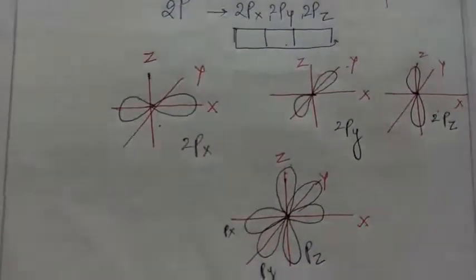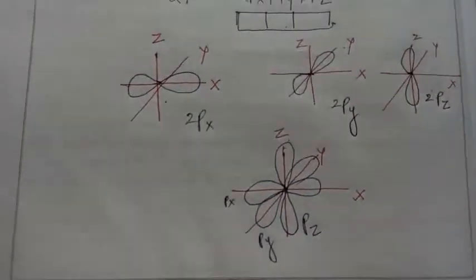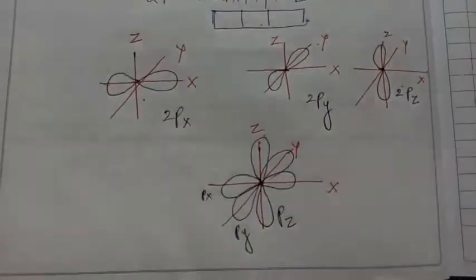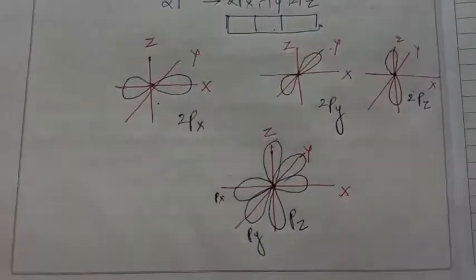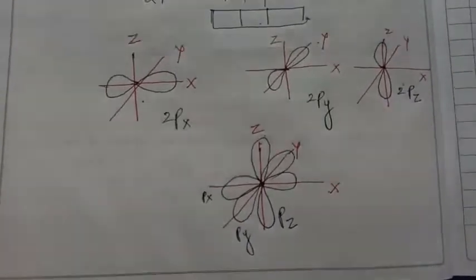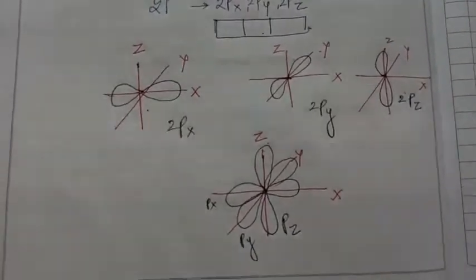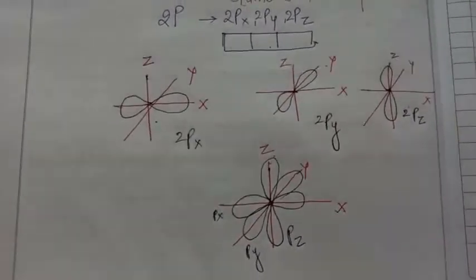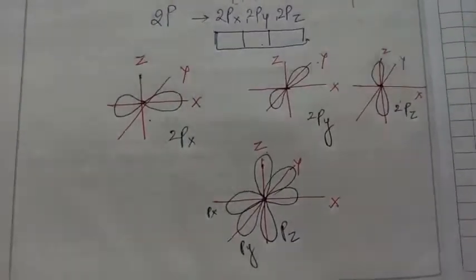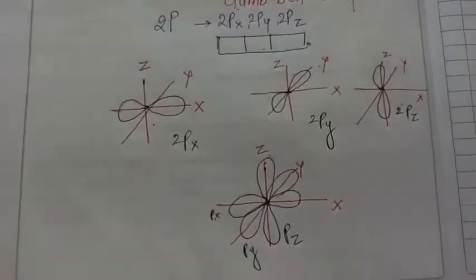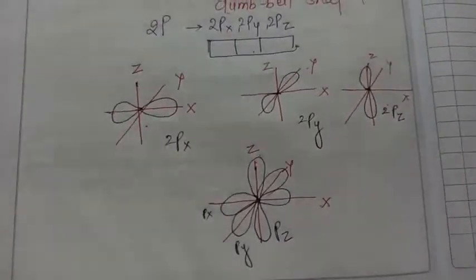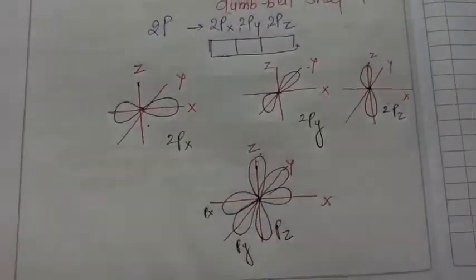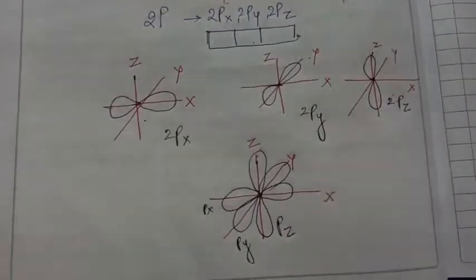One more thing I want to add over here, as I told the definition of orbital, it is the region of space where the probability of finding the electron is maximum. And where did we get the orbitals? When we read the quantum numbers, the azimuthal quantum number that is represented by L, we know about these orbitals.